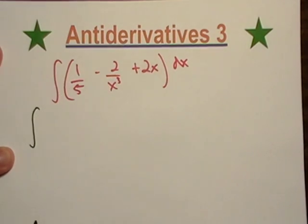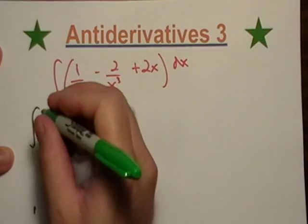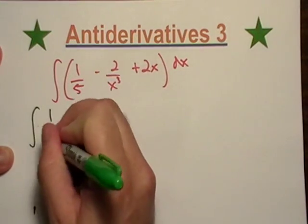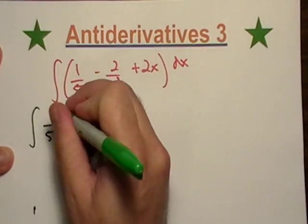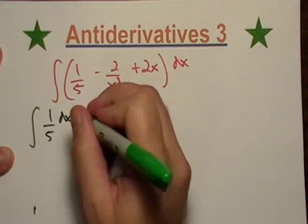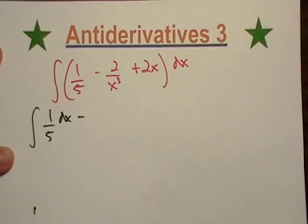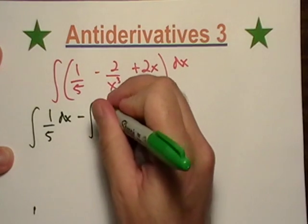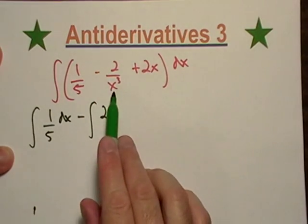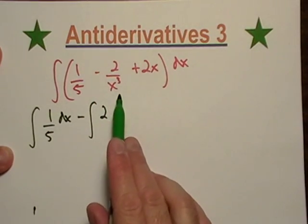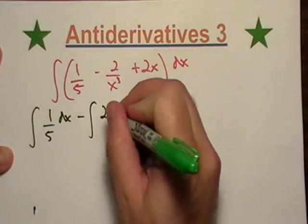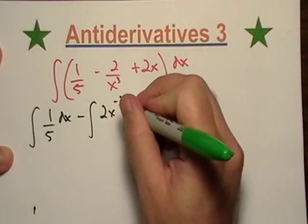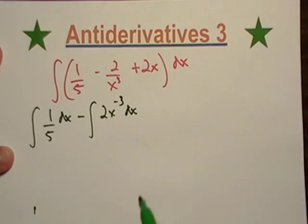So if I do that, what would I get? I'd get one-fifth, and I need to put my dx inside, and I'm going to subtract the integral of two over x to a third. But it's much easier to work with these exponents if we rewrite them as negative exponents. And that was the same with derivatives, too.